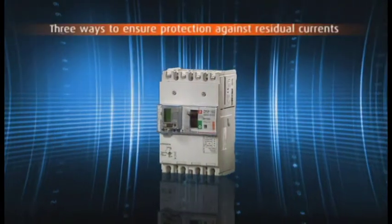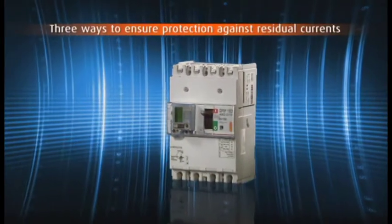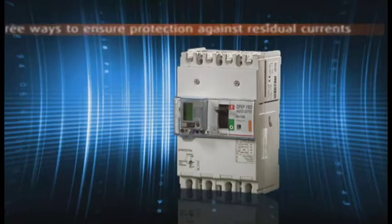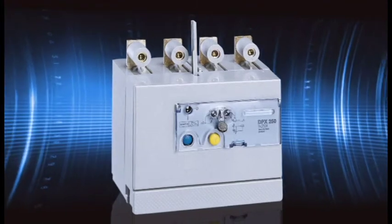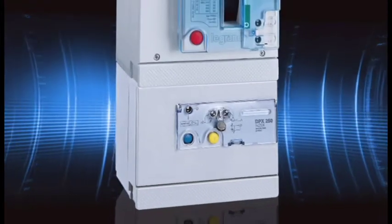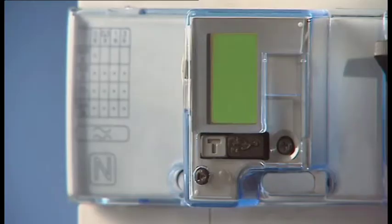The new DIN rail mounting DPX Cubed range offers an electronic version with an integrated earth leakage module ensuring protection against short circuits, overloads and residual currents. The downstream or side mounted earth leakage module is no longer needed for the DPX Cubed range.